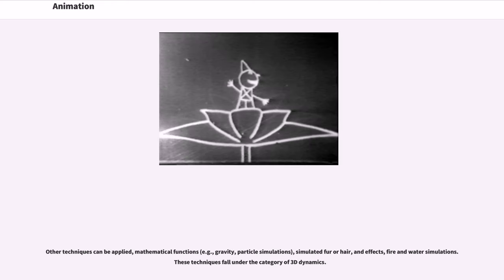Sometimes the mesh is given an internal digital skeletal structure called an armature that can be used to control the mesh by weighting the vertices. This process is called rigging and can be used in conjunction with keyframes to create movement. Other techniques can be applied, such as mathematical functions — for example gravity, particle simulations, simulated fur or hair, and effects like fire and water simulations. These techniques fall under the category of 3D dynamics.